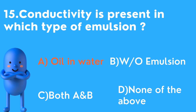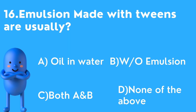Sixteenth question: Emulsions made with Tweens are usually — options are A) Oil-and-water, B) Water-and-oil, C) Both, D) None of the above. Tweens are hydrophilic emulsifiers, so they form oil-in-water emulsions. Oil-and-water is the correct answer.